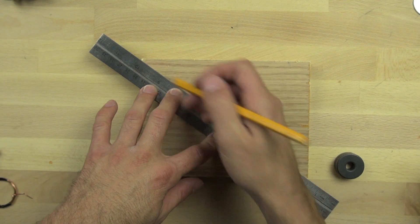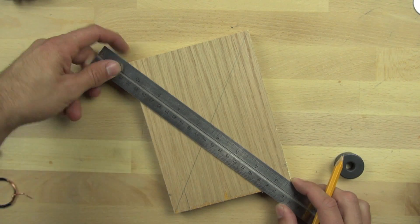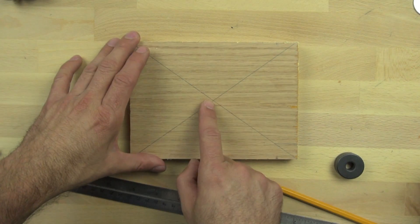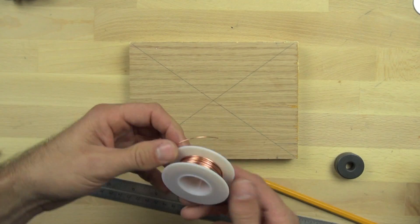So we're going to take a scrap block of wood, and we're going to mark the corners line to line, and we're going to just do that so we can find the center of the block, and that will just give us a reference point.